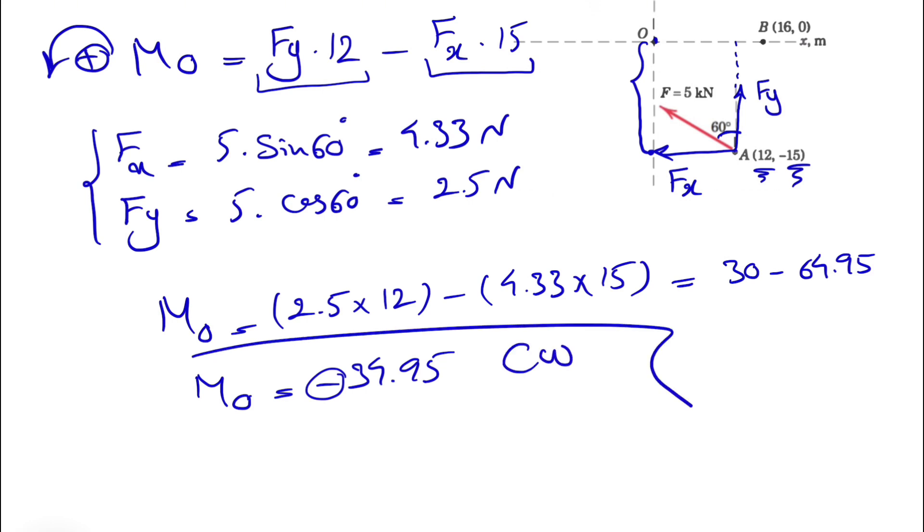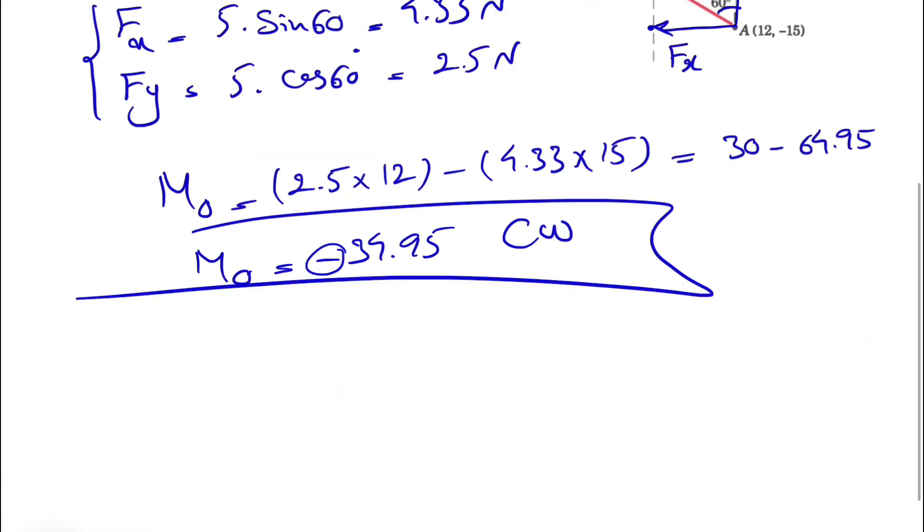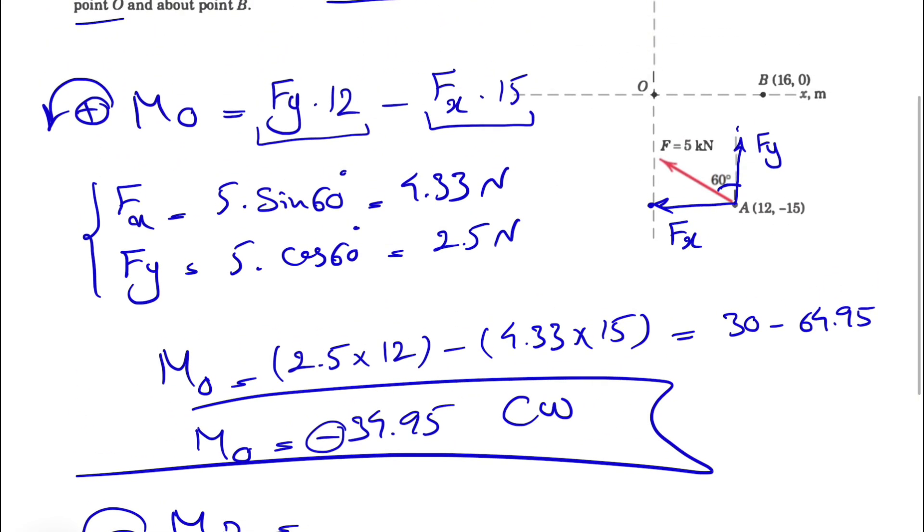We're going to have a very similar scenario for point B too. We only have a different position vector, so I'm just going to clean up the figure, but the rest is pretty similar.